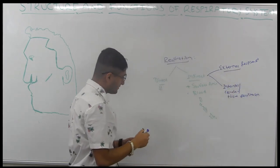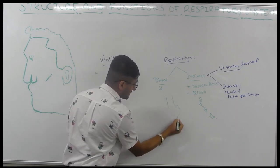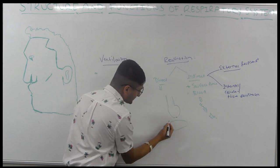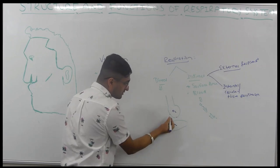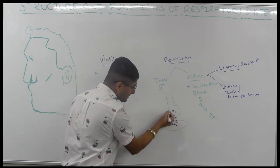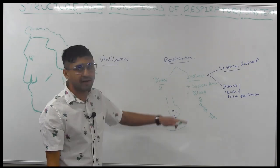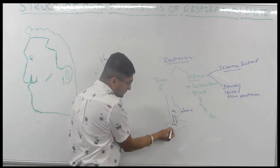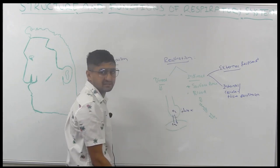External respiration: if we imagine the conducting joint and alveoli, blood is coming through the capillary, and there's oxygen and carbon dioxide present. The exchange of respiratory gases between inhaled air and the blood through the respiratory surface — this is called external respiration. It is the respiratory gas exchange between the inhaled air and the blood.